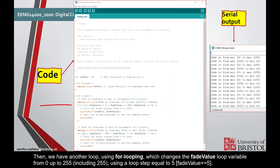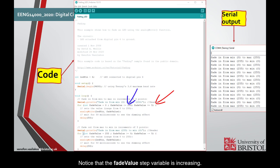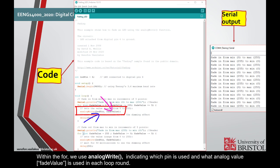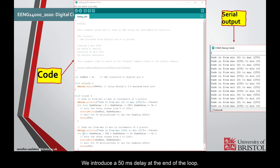Then, we have another loop using for looping, which changes the fade value loop variable from 0 up to 255, including 255, using a loop step equal to 5. Notice that the fade value step variable is increasing. Within the for, we use analog write, indicating which pin is used and what analog value is used in the loop round. We introduce a 50 millisecond delay at the end of the loop.